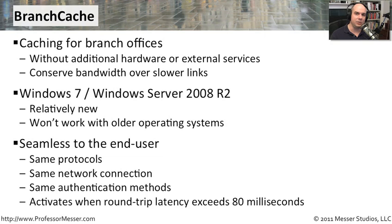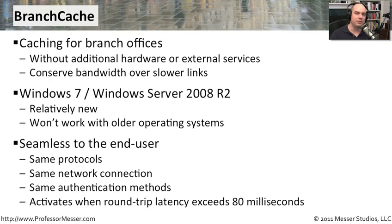Branch Cache is very seamless to the end user — they don't even know it's happening. Configuration changes are made on their computer, telling it to use Branch Cache. It uses the same protocols, the same network connectivity, and the same authentication methods it would normally use. The user just notices that things are faster. Branch Cache only kicks in if your latency to the remote server exceeds 80 milliseconds round trip time, at which point it automatically starts caching things locally.